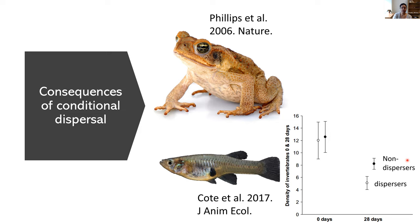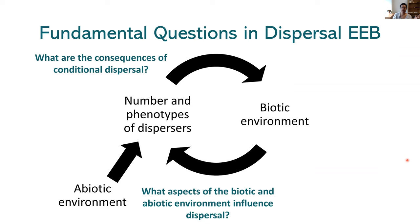Here is a representation of what I've been talking about: the biotic environment together with the abiotic environment influences the number and phenotypes of dispersers, and that in turn can feed back to influence the biotic environment. But there are major gaps in our understanding. We don't have a complete understanding of what aspects of the biotic and abiotic environment influence dispersal, or how organisms integrate information about multiple variables to make dispersal decisions. And it's even less clear how the consequences of conditional dispersal differ from our current expectations based on the classic idea that dispersal is constant, independent of environment and phenotype.